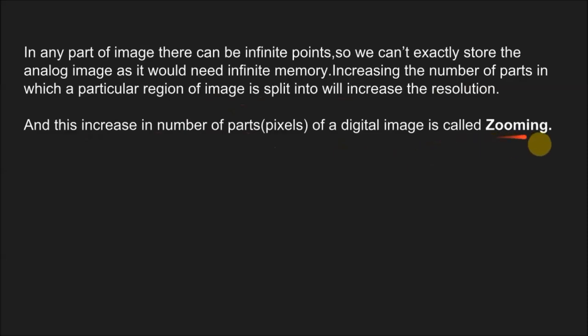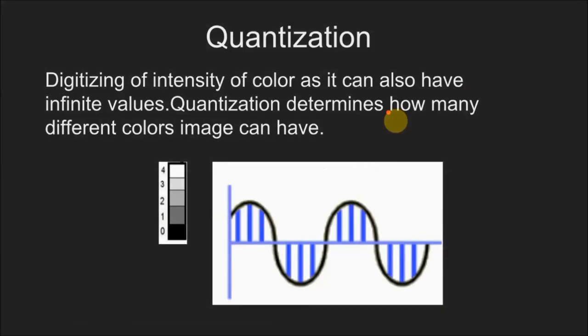What is quantization? Quantization means digitizing of intensity of color. As intensity of color can also have infinite values, quantization determines how many different colors an image can have. If we consider that this is the analog signal for an image, the y-axis determines the intensity of color and x-axis determines elements of a picture, that are the pixels.